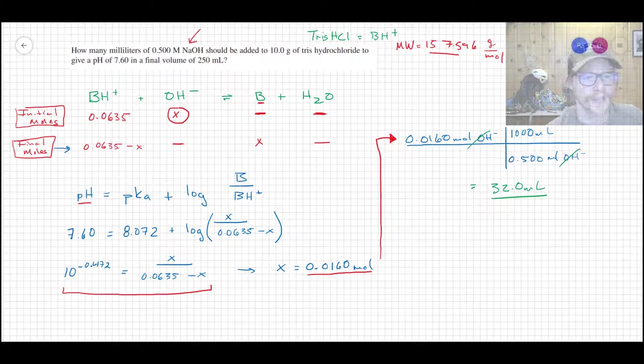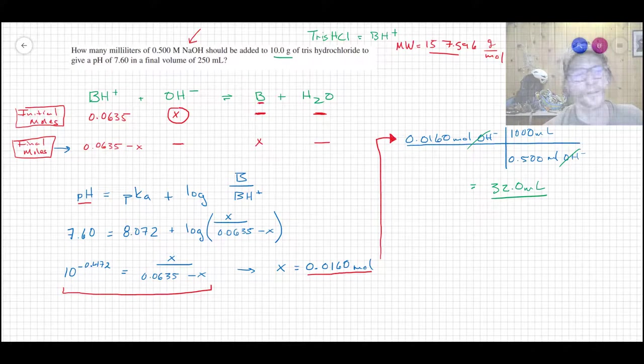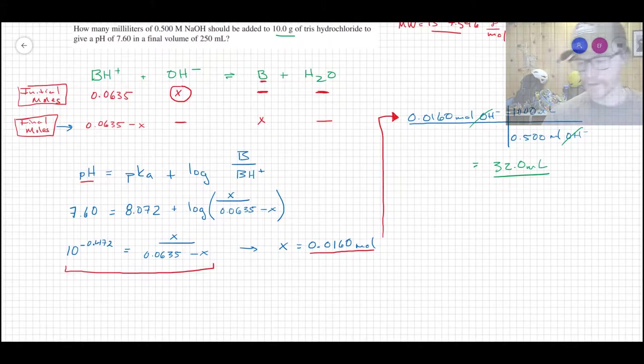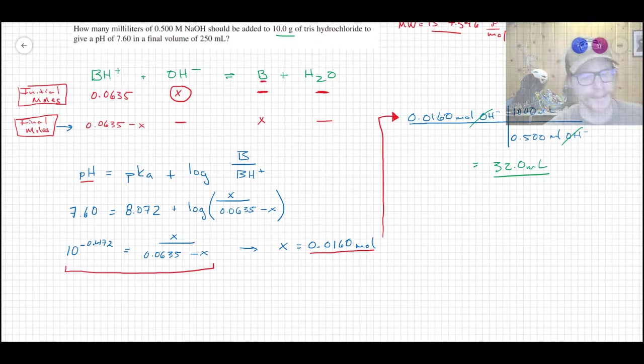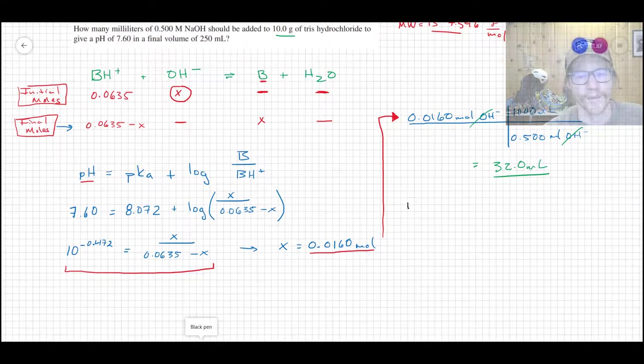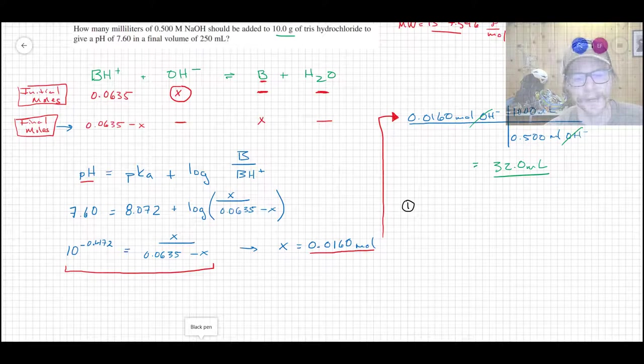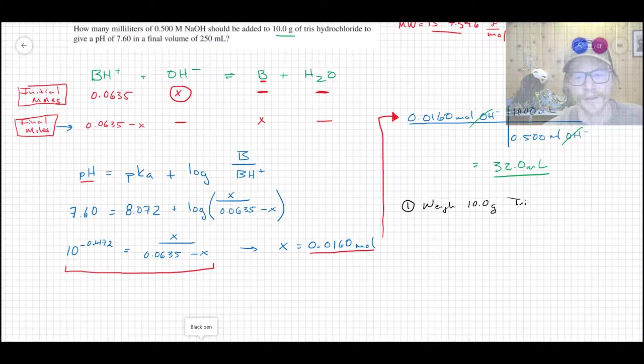So what that really means is you're going to take your vessel, and you're going to add your 10 grams of Tris hydrochloride, you're probably going to add a little bit of water, you're going to measure out 32 milliliters, and then you're going to fine-tune this to the desired pH with a little bit of HCl or NaOH. So how to do this in practice, step by step.